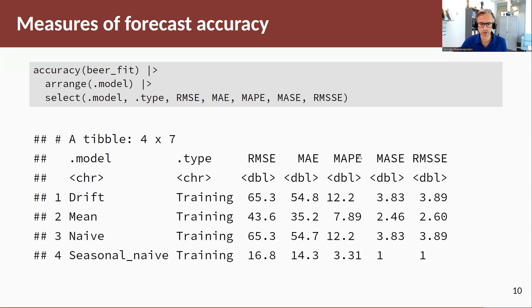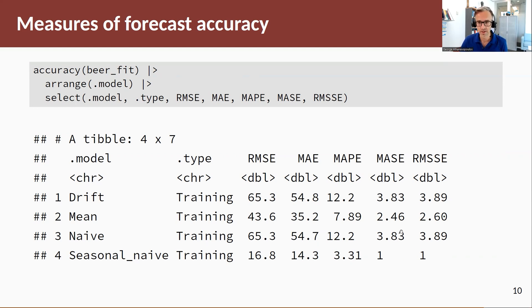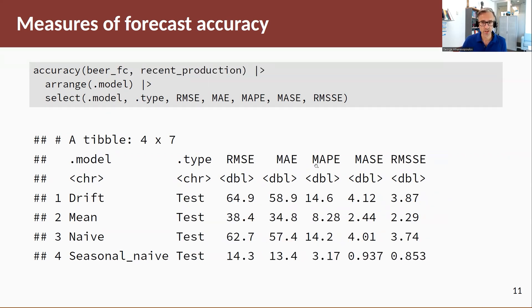One thing to highlight: with MASE and RMSSE, we are scaling the forecast errors — in this case the fitted values over the training set — by the in-sample naive. So we're scaling the in-sample naive forecast errors by the in-sample naive forecast errors, hence they equal one.